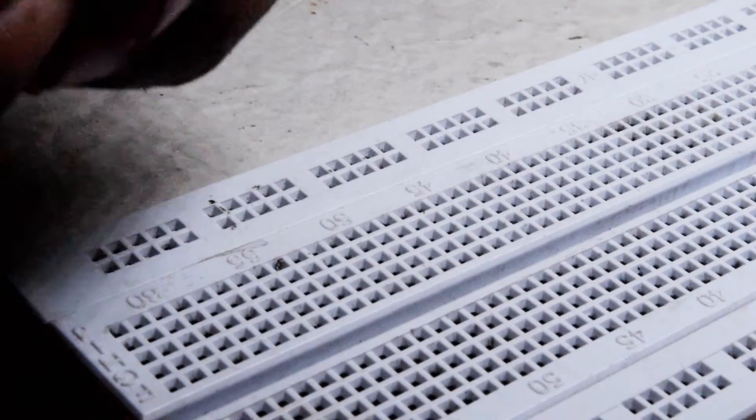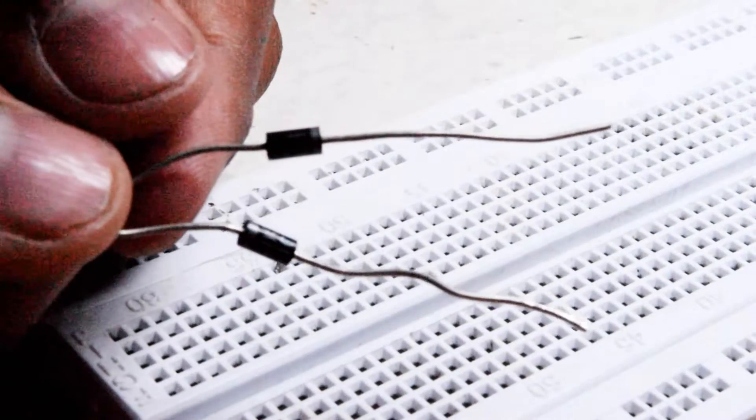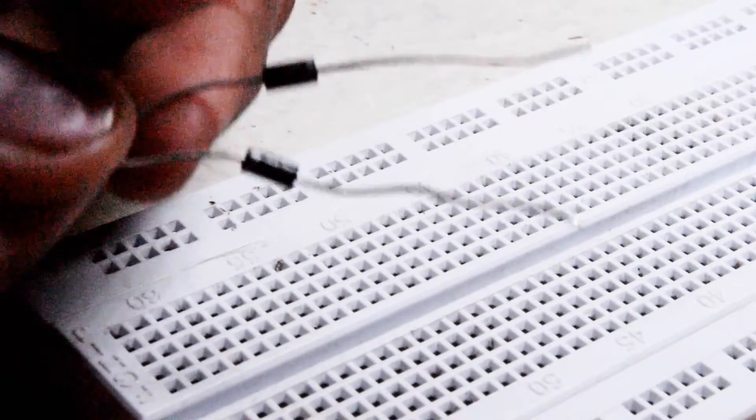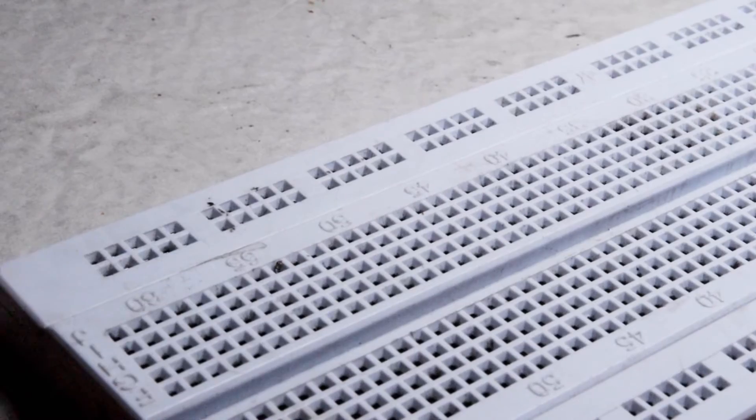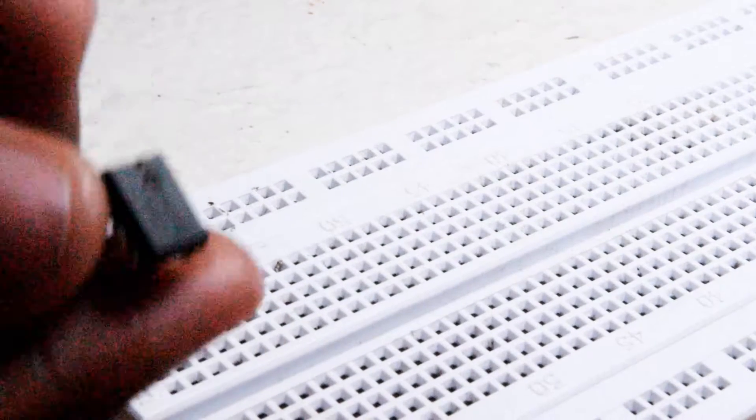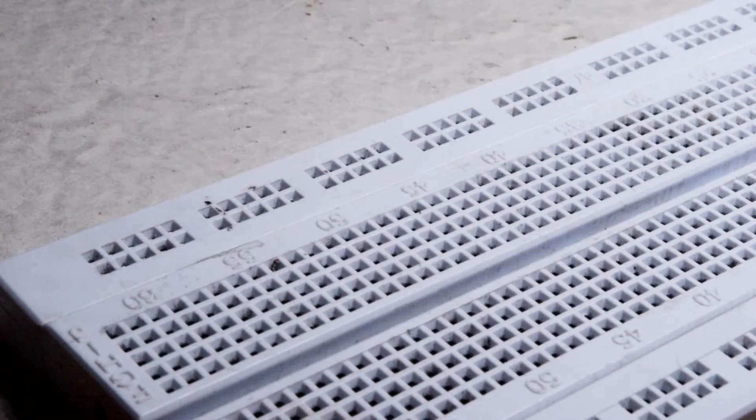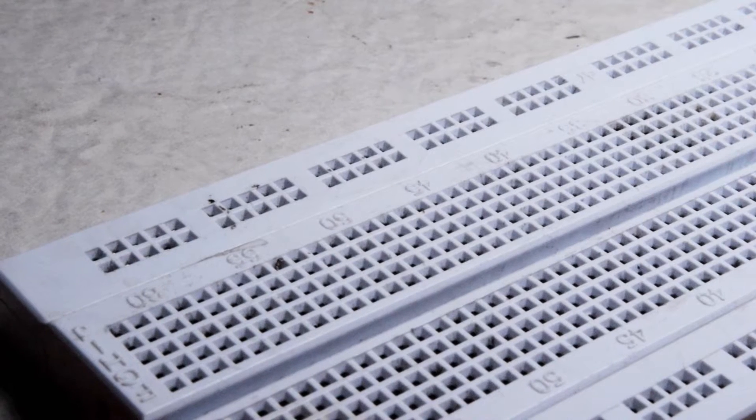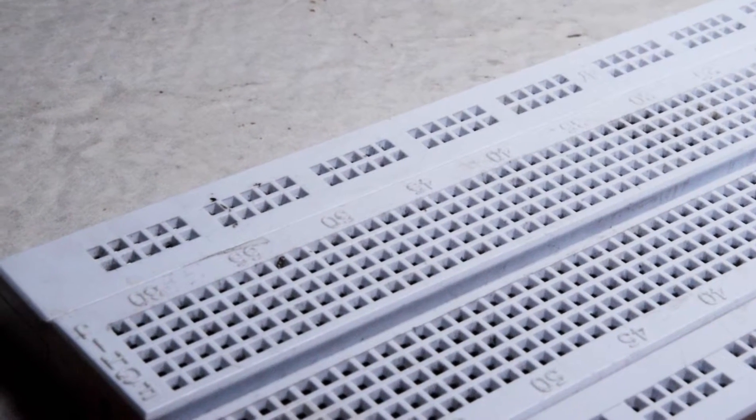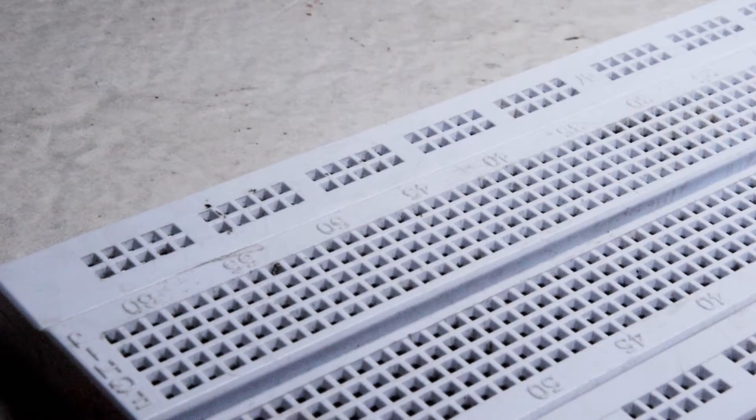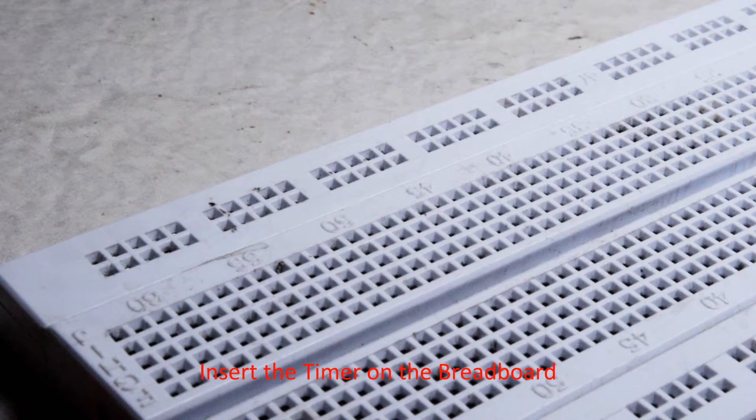Two 1N4007 diodes, a 555 timer which is the most important component, breadboard, connectors, and a breadboard. Let's get started. Insert the timer on the breadboard with the dot facing to the left side.